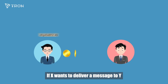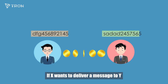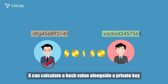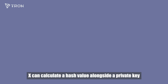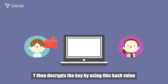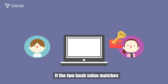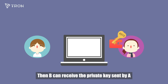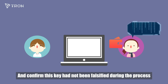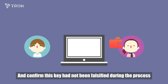If X wants to deliver a message to Y, X can calculate a hash value alongside a private key. Y then decrypts the key by using this hash value, which can match with his or her own calculated hash value. If the two hash values match, then Y can receive the private key sent by X, and confirm this key had not been falsified during the process.